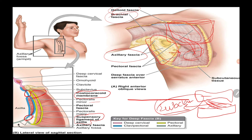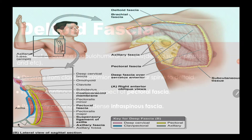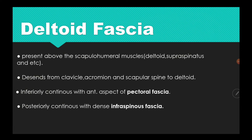The suspensory ligament is directly attached to two divisions of the axillary fascia. It supports the axillary fascia and contributes to forming the axillary fossa.